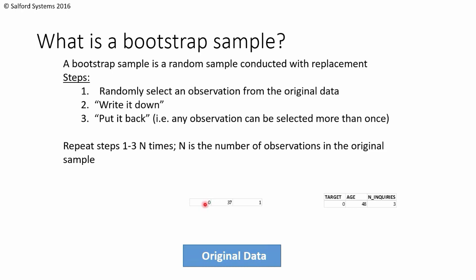We'll randomly select an observation from the original data set, write it down, and then put it back. We'll select another one, write it down, and then put it back.